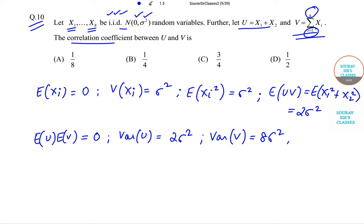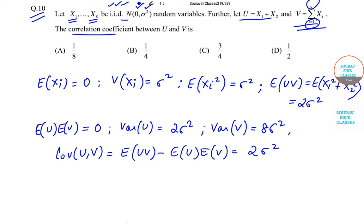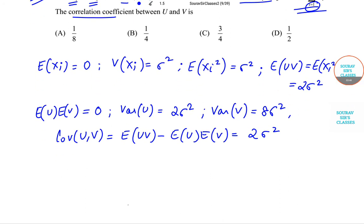Now let us get the covariance. The covariance between U and V will be E(UV) minus E(U) times E(V). This is the standard formula I am using. So we get the value 2σ². Now let us get the correlation coefficient.